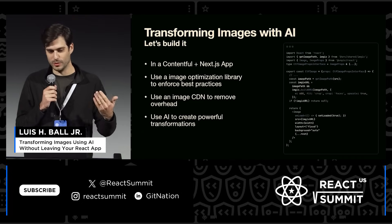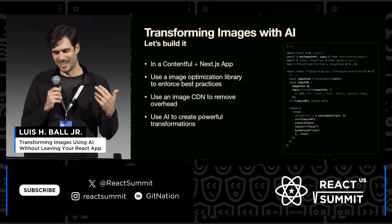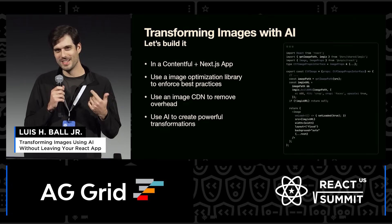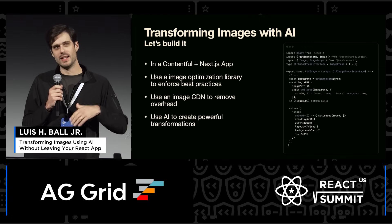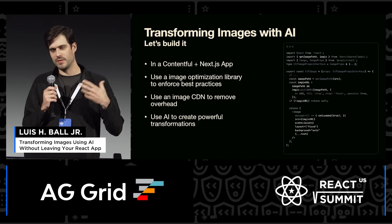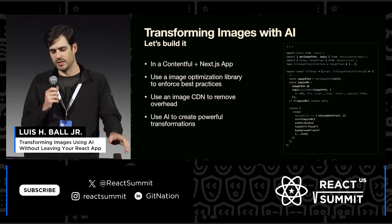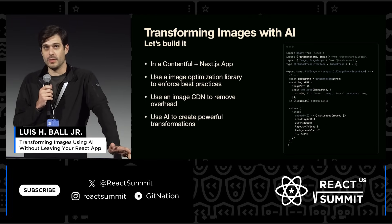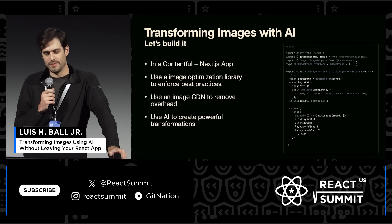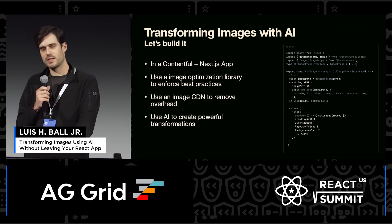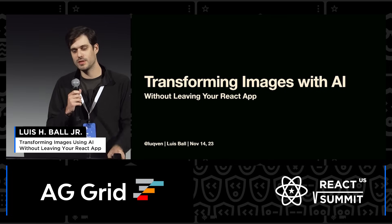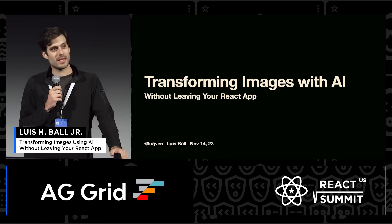So just recapping what we did: we built a Contentful Next.js application, used an image optimization library called Unpic Image, and used an image CDN to remove all that nasty overhead of invalid caches or storing images in the cloud. And finally, we leveraged that CDN to use AI parameters like facial recognition cropping, background removal, and upscaling — making sure our images always looked their best when displayed. That's transforming images using AI without leaving your React app. Thank you all so much — feel free to ask questions.